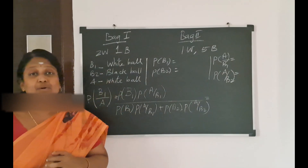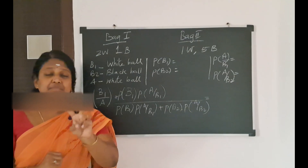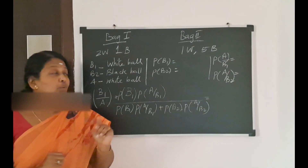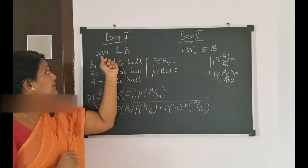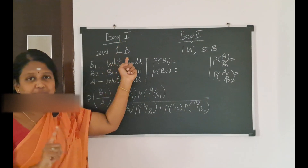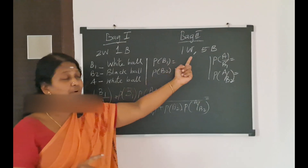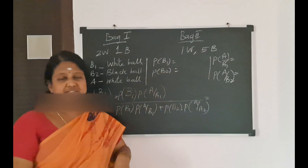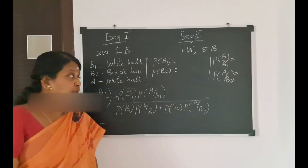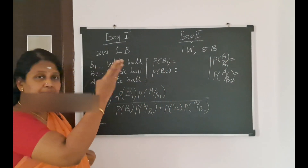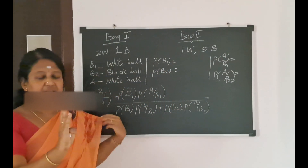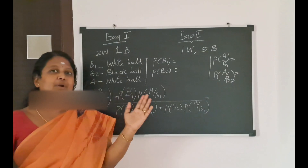Now we have two bags. In Bag 1 there are two white and one black ball. In Bag 2 there is one white and five black balls. So there are two bags — this is a bag problem.